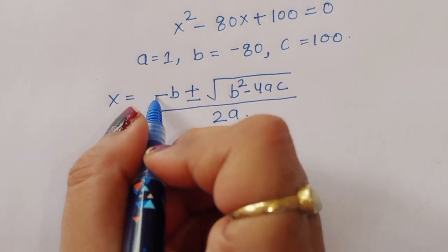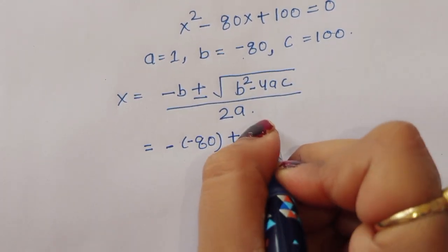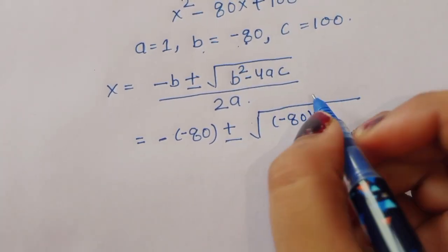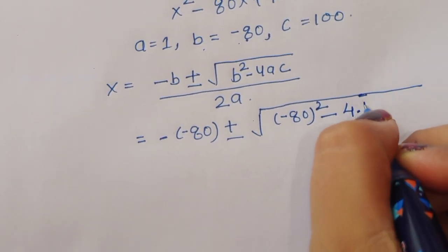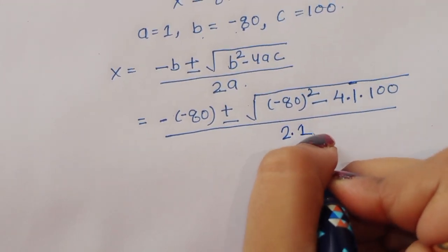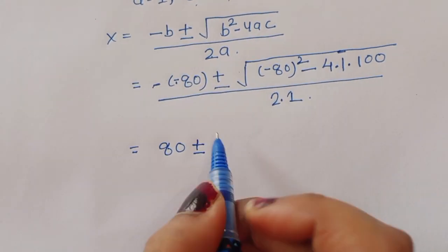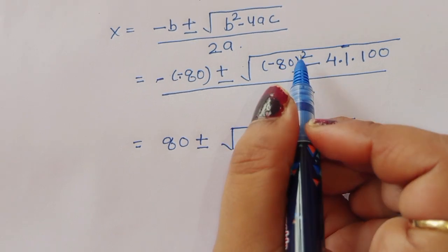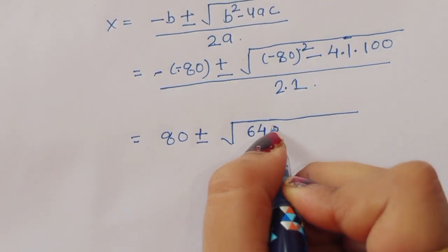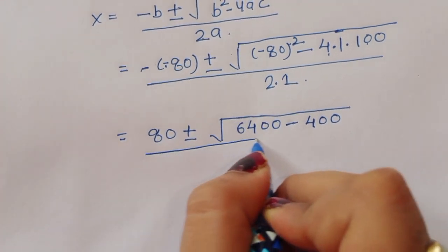Substituting: x = (80 ± √(80² − 4·1·100)) / (2·1) = (80 ± √(6400 − 400)) / 2 = (80 ± √6000) / 2.